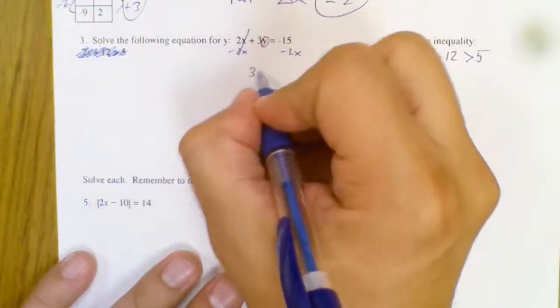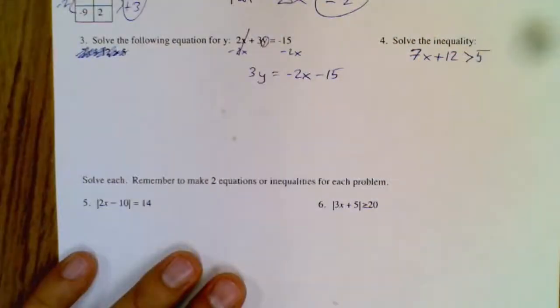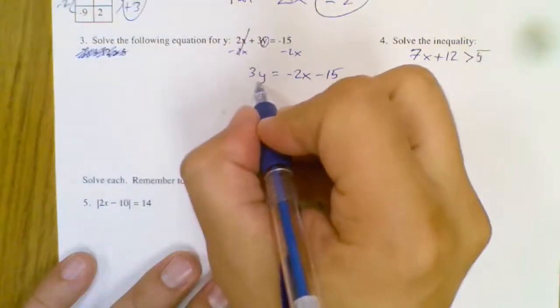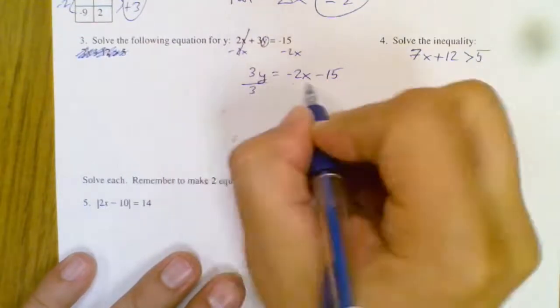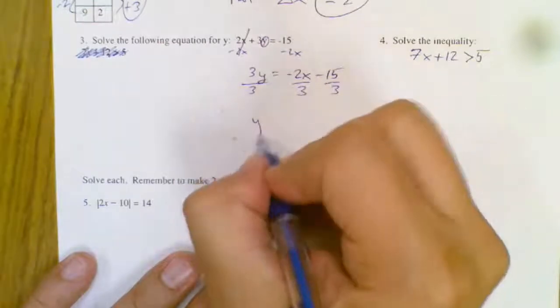And I'll have 3y equals negative 2x minus 15. I could have written negative 15 minus 2x and it would have been totally fine. And now y is almost by itself, but you got to divide by 3. One thing to watch out for is make sure you divide every single piece by 3.